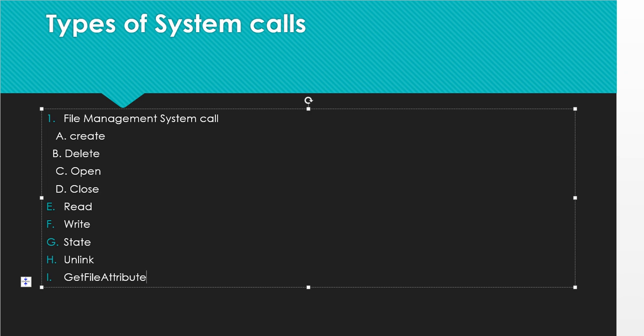Create means create a new file. Delete means delete a file. Open means open an already created file. Close means close a file no longer in use. Read means read from the file. Write means write to the open file. State means get information about a file. Unlink means remove a file from a directory — the directory remains but the file is removed. Get File Attribute and Set File Attribute include information like file name, file type, and extension — for example 'abc.doc' where 'doc' is the extension and 'abc' is the name.